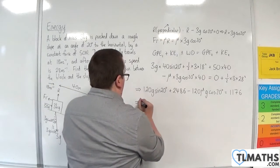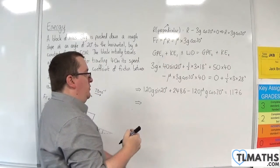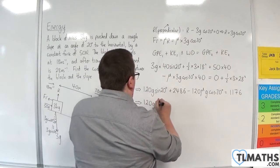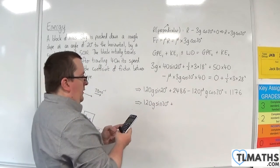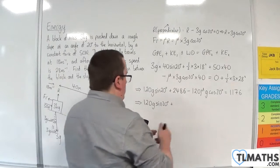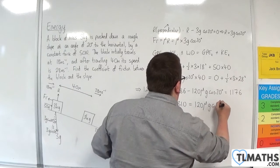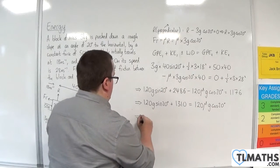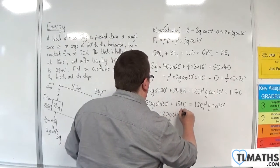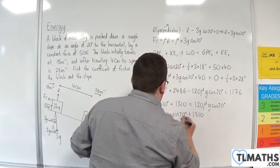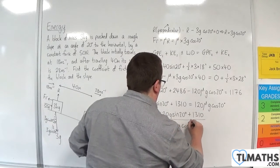Okay, so I'm going to move that over to the other side. Take 1,176 on both sides. So 120 G sine 20 plus 2486 take away 1,176 is 1,310, and that's 120 mu G cosine 20. So mu will be 120 G sine 20 plus 1,310 divided by 120 G cosine 20.